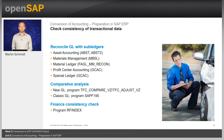Two checks are available to reconcile material management with the general ledger: transactions MBAL5 and FAGL_MM_Recon. Both compare stock GL account balances with total stock values recorded in materials management or material ledger, displaying total stock value together with GL account balance and any deviations. FAGL_MM_Recon is primarily designed to read stock values from material ledger; if material ledger is not active, it reads values from MM tables.